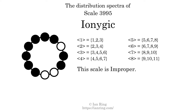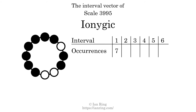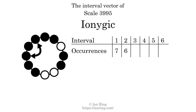Since the generic interval ranges overlap, this scale is an improper scale. The interval vector of a scale is a description of what intervals exist between its tones. There are 7 intervals with the size of 1 semitone, here, here, here, here, here, here, and here. There are 6 intervals with the size of 2 semitones, here, here, here, here, here, and here.